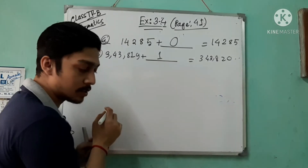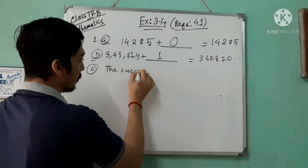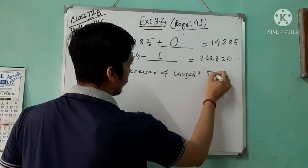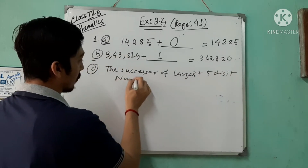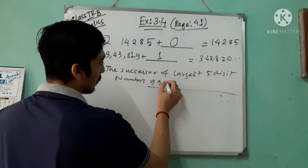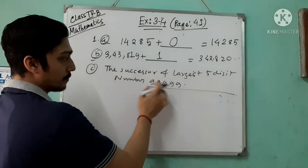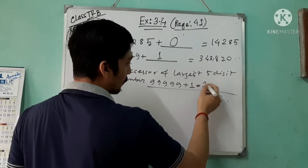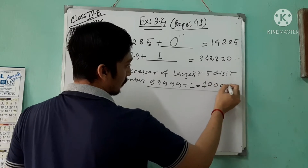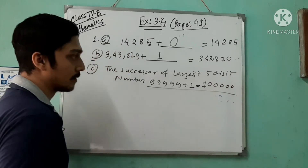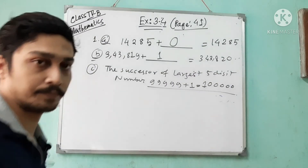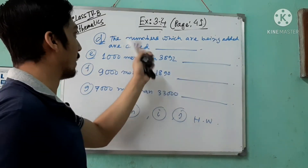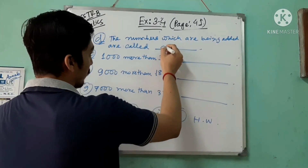Question 1c: the successor of the largest 5-digit number. The largest 5-digit number is 99,999. You add plus 1 and you get 1,00,000 — that is 1 lakh. The numbers which are being added are called addends.